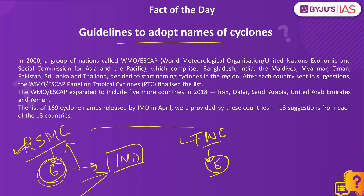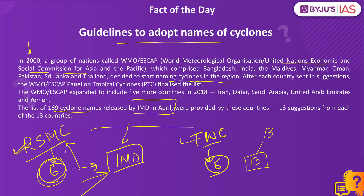Why do we adopt names for cyclones? Because it makes it easier for people to remember, and it helps in disaster management, creating awareness, and so on. In the year 2000, a group of nations — the World Meteorological Organization and the United Nations Economic and Social Commission for Asia and the Pacific — decided to start naming cyclones in the region. Today there are 13 countries in the list, and every country has provided 13 suggestions, giving a total of 169 cyclone names released by IMD.